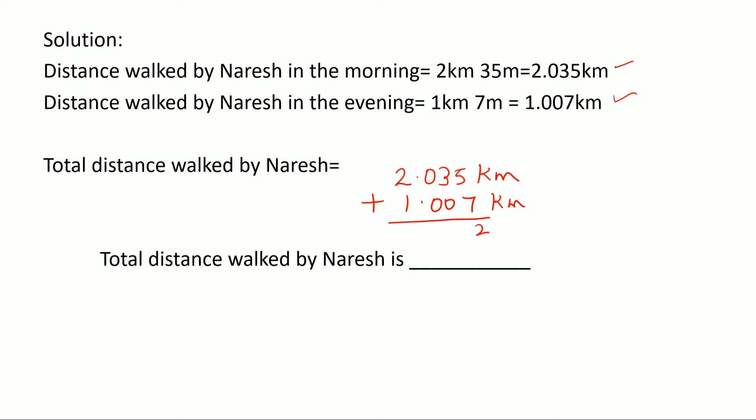So if I add these two, this would be equal to—7 plus 5 is 12, 1, 4, 0, place a decimal point—3.042 kilometer. So you need to write the same answer here: 3.042 kilometer. So we can say therefore total distance walked by Naresh is 3.042 kilometer. So that's 3 kilometer and 42 meters. I hope this is clear to all, thank you.